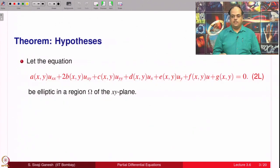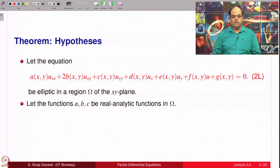Let us consider this second order linear equation 2L which is elliptic, assumed to be elliptic in a region omega. Assume further that the coefficients A, B, C are real analytic functions. This is a requirement for the proof of our theorem.